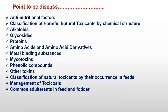Under the first classification, based on chemical structure, that is alkaloids, glycosides, proteins, amino acids, anti-nutritional derivatives, metal-binding substances, mycotoxins, phenolic compounds — different phenolic compounds which also have harmful effects — and other toxins.